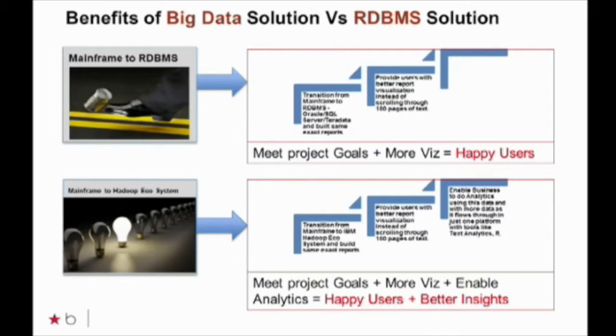It says: enable the business to do analytics using this data, with more data as it flows through, just in one platform. Once we put this data into HDFS, there are a lot of tools — all those boxes you saw in the previous slides, blue boxes, yellow boxes. The data is already there, and if more credit data flows into HDFS, you can do a lot of analytics. There are many tools that come with IBM Big Insights distribution.